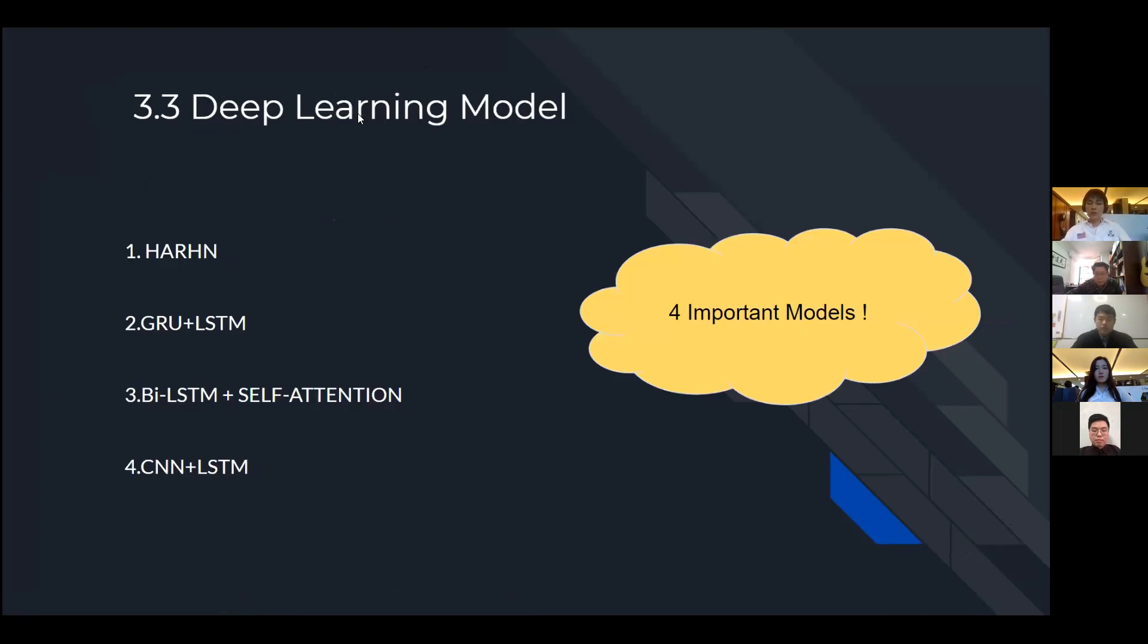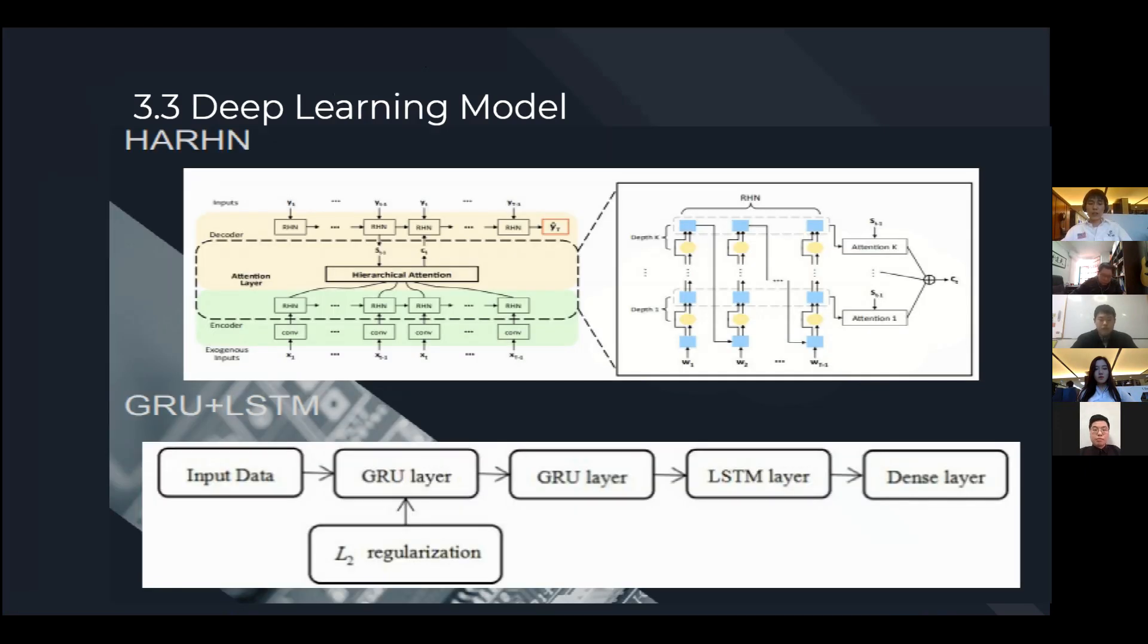Since our group mostly focus on recurrent neural network, I decided to introduce four different models using different structures out of the 20 models. The first one is a hierarchical attention based recurrent highway network. This network includes an encoder and a decoder. The input of the encoder is the open, high, low price and the technical indicators, where the input of the decoder is the history close price. The input of the encoder first goes through a one dimension convolution layer and then goes through the recurrent highway network with depth equals to k. Then the output of the encoder goes through a hierarchical attention with the output of the decoder. In this case, we can predict the close price at our next time step.